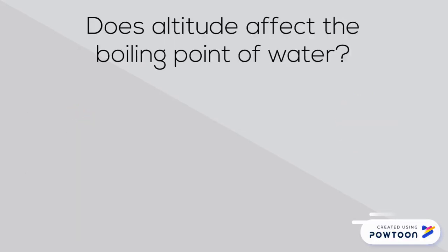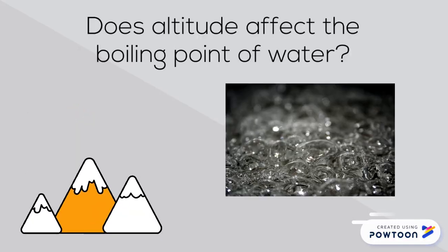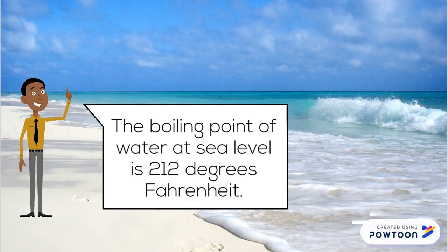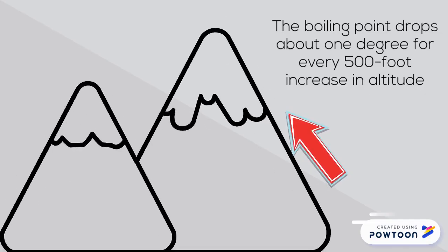For a Geography Minute, does altitude affect the boiling point of water? The boiling point of water at sea level is 212 degrees Fahrenheit. The boiling point drops about 1 degree for every 500 foot increase in altitude.